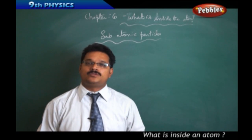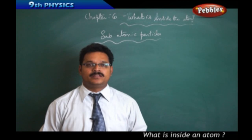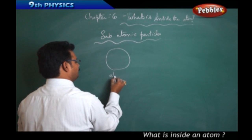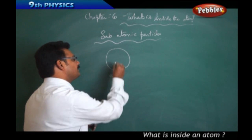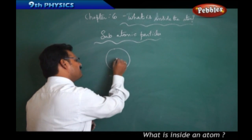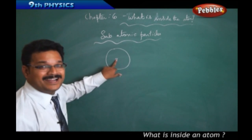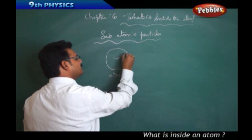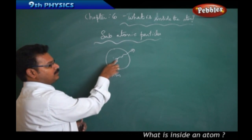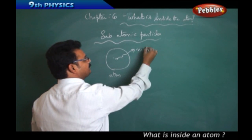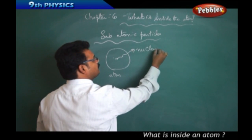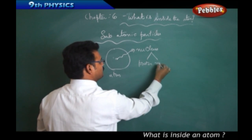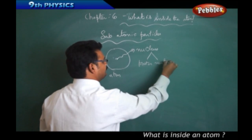At the start of modern physics, scientists discovered that inside the atom there is a very, very small positive-content matter existing at the center. This very small positive content is called the nucleus. Inside the nucleus there are two particles: one is the proton and the other is the neutron.